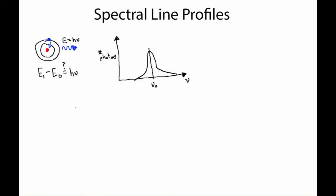The center of that distribution at nu0 will correspond to this energy difference, so delta e equals h nu0. But for any particular atom undergoing this transition there's a probability of getting a photon at a lower energy and a probability of getting a photon at a higher energy, corresponding to a slightly lower or slightly higher frequency. The function that describes the probability of getting a photon as a function of frequency around the center frequency of this transition is called the line profile function, often denoted as phi of frequency.